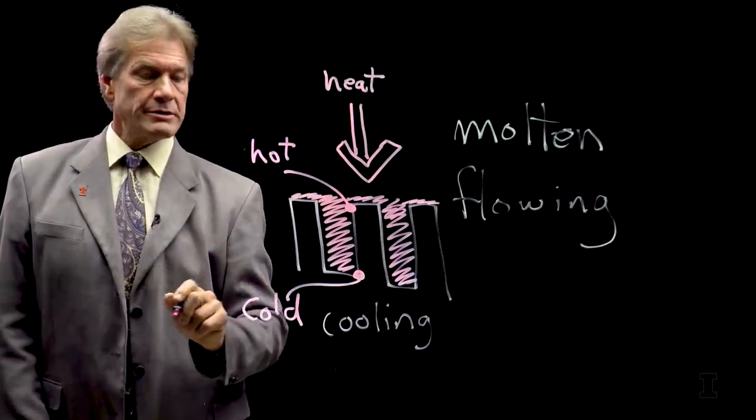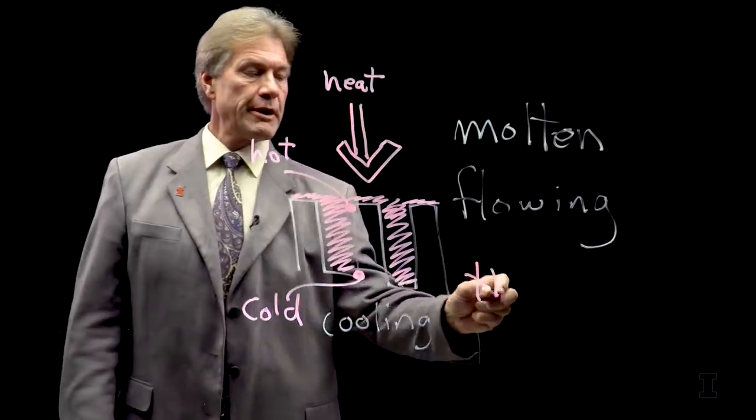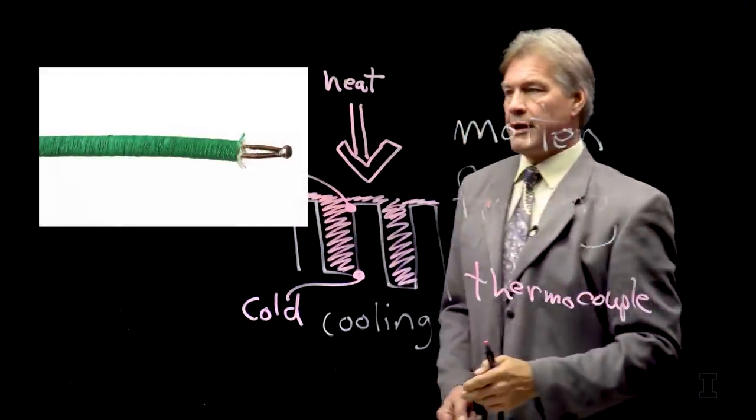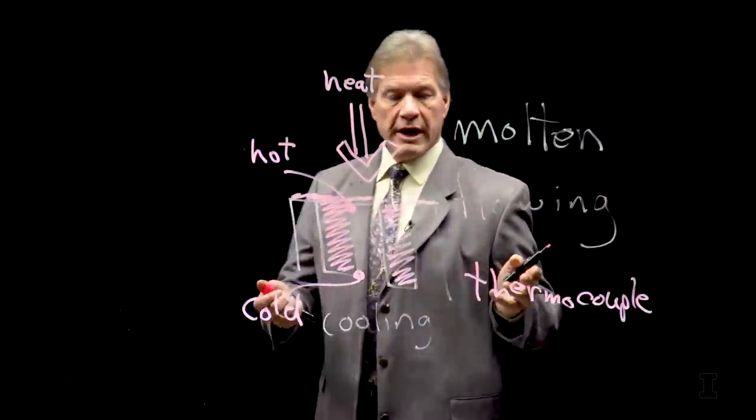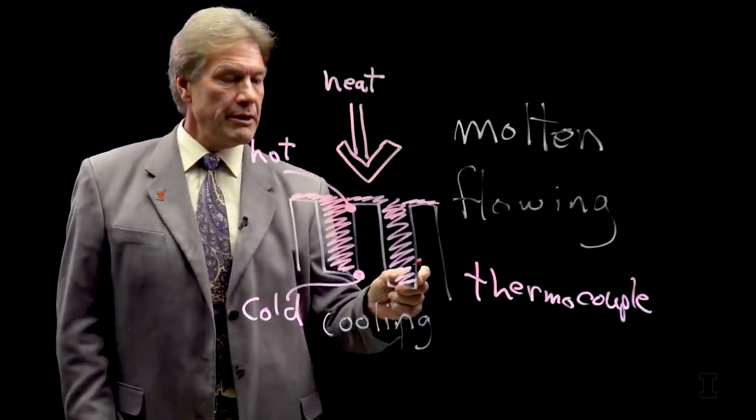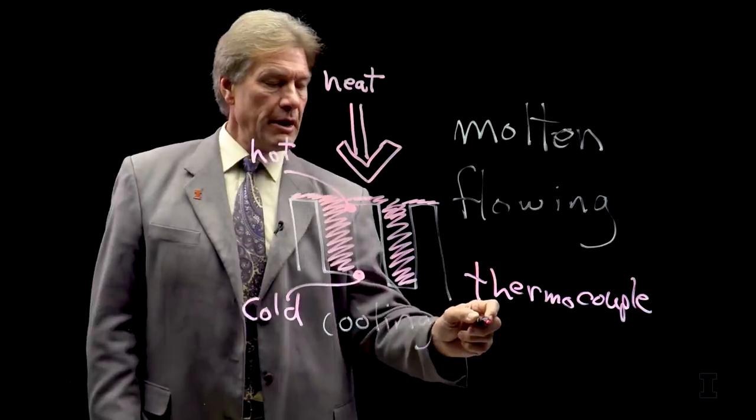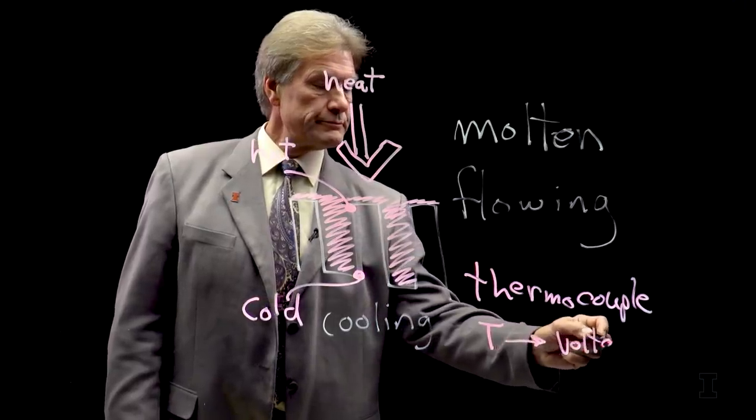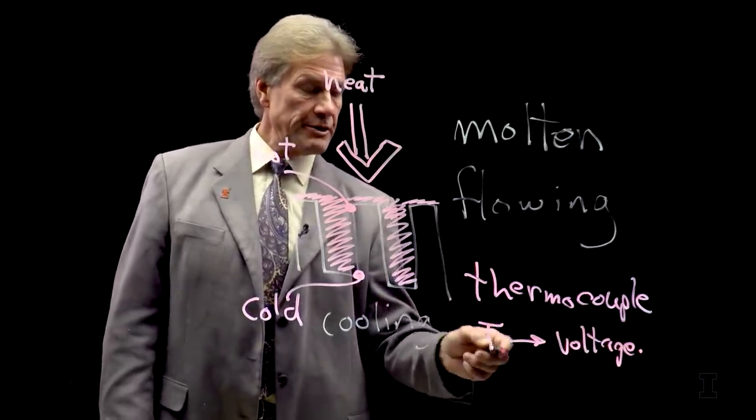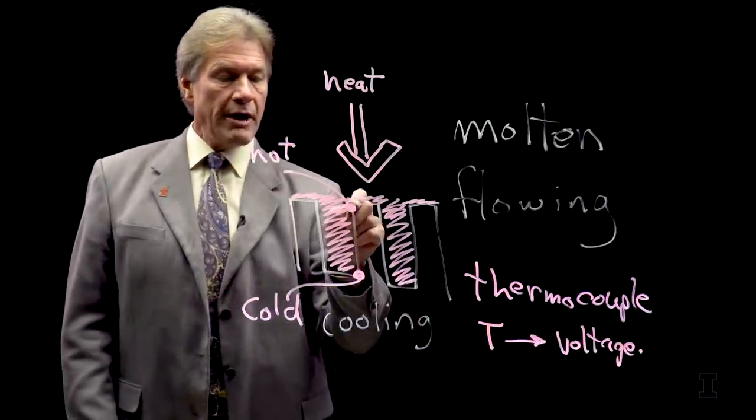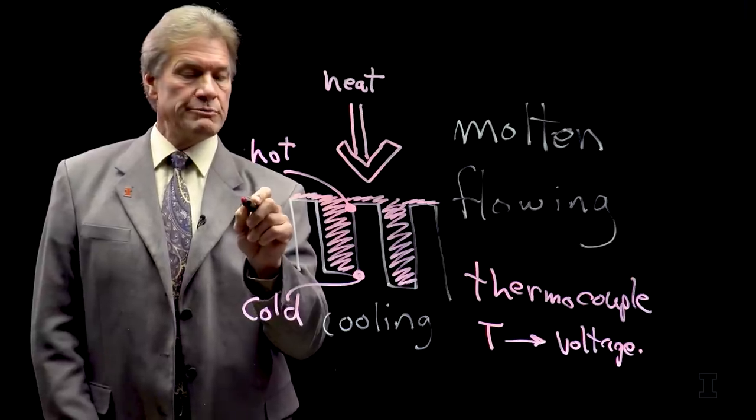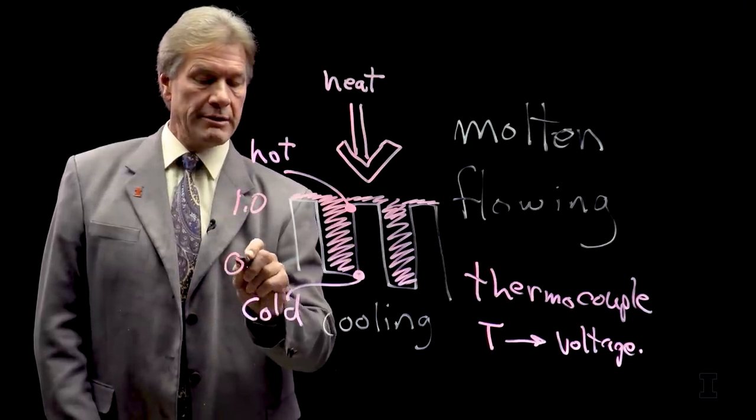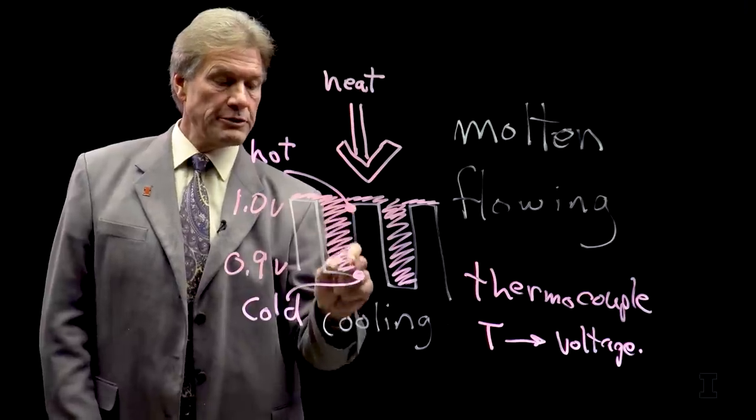If I take two metals and I have them at a given temperature, it's what is known as a thermocouple. And thermocouples have the advantage and the property that if I have a temperature, a given temperature produces a given voltage. Different temperature gives you a different voltage. So I will have, say, a high volt here. Maybe this will be at one volt. And down here, it will be at 0.9 volts of a voltage difference.